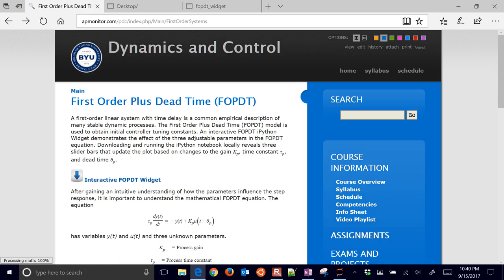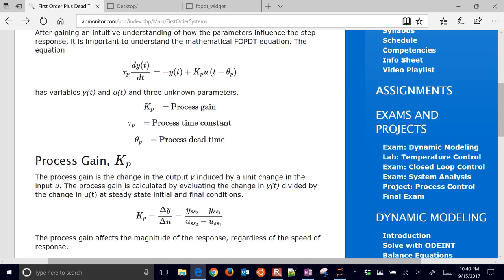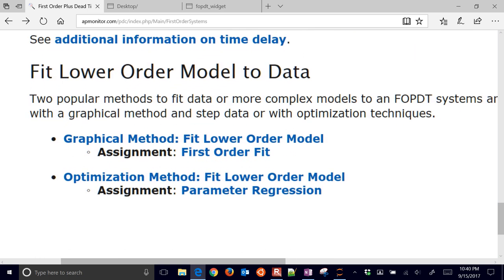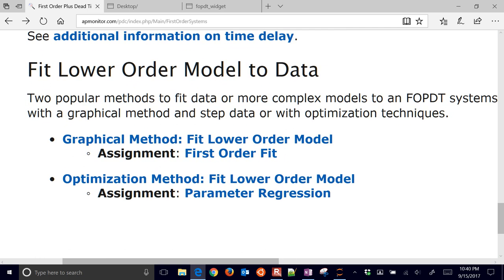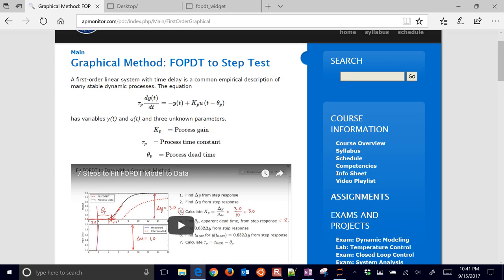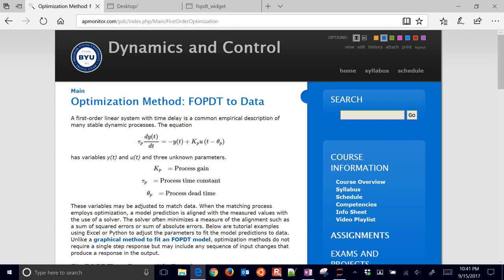So that concludes this tutorial on first order plus dead time models. I'll just mention the FOPDT models can model many dynamic systems, so it's a simplification. You can fit it, fit data, fit these parameters to data to get an approximate match of the dynamics of a system. There's going to be two areas that we're going to focus on. One is going to be a graphical method for fitting. So you could look at a response and be able to pick out these three constants, Kp, TauP, and ThetaP. The other one is an optimization method. So if you don't have a good step input, then you might need to use optimization to come up with Kp, TauP, and ThetaP.